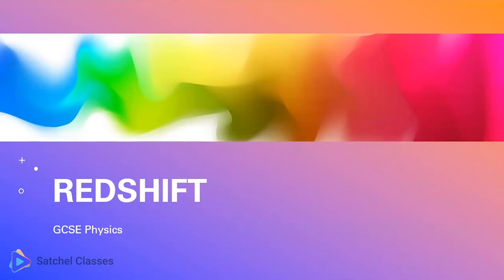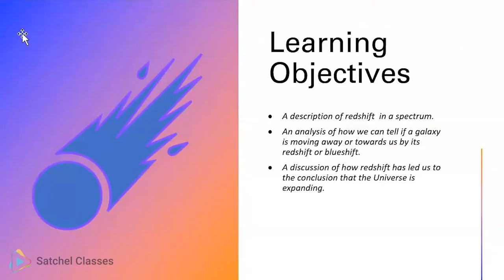Let's start with learning objectives. We're going to look at a description of redshift and see it in a spectrum. We'll look at analysis of how we can tell if a galaxy or star is moving away or towards us by its redshift or blueshift. And finally, a discussion of how redshift has led us to the conclusion that the universe is expanding.